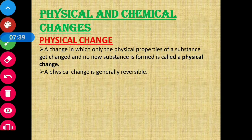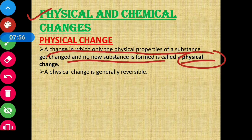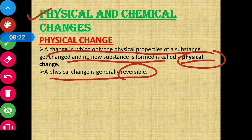Our next topic is physical and chemical changes. A change in which only the physical properties of a substance get changed and no new substance is formed is called a physical change. A physical change is generally reversible. Ek aisa change jisme sirf physical properties change hoti hain, koi new substance nahi milta — those changes are called physical changes.